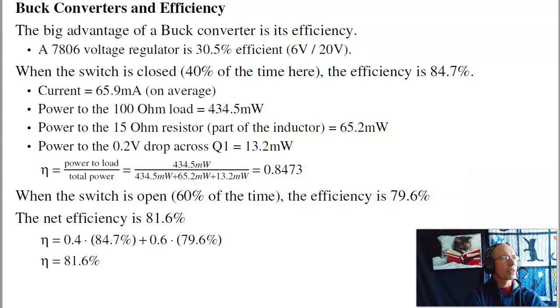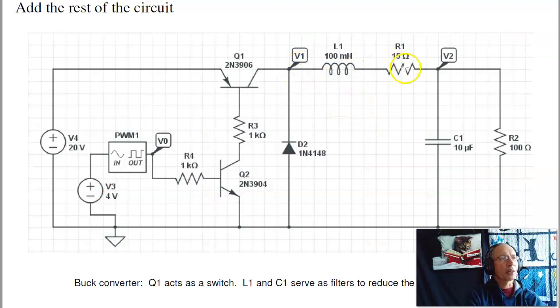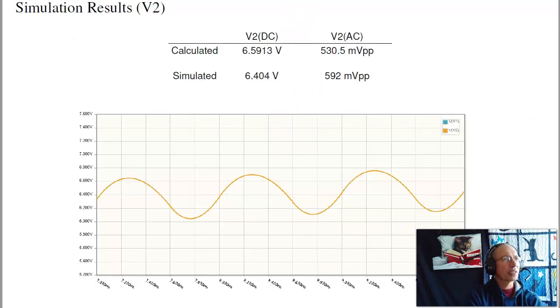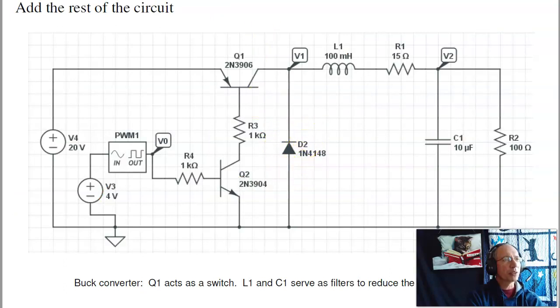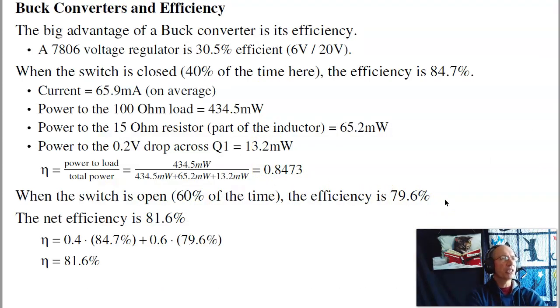In terms of efficiency, the big advantage of the buck converter is efficiency. The 7806, that's a 6 volt output, just to keep it apples to apples comparison, would be 30% efficient. The buck converter, in contrast, is 84% efficient. And you can see that back on this circuit. If I have current flowing, the power to the load is the output power. The total power is I squared R, power loss in R2, I squared R1, and the voltage drop. This is a 0.2 volt drop times current gives you power. That's the total power when the switch is closed. When the switch is open, it's almost the same calculation. But instead of drop across Q1, I would include the voltage drop across DIO2, that 0.7 volts. Put them both together, the average efficiency is 79%, or 81%. That's a whole lot better than the 30% efficient of the voltage divider, or 7806, for quite a bit more work.